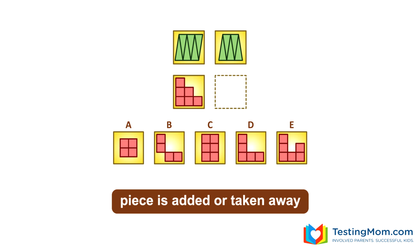Now let's look at an analogy puzzle. The rule in the top boxes is that one segment in the green figure is taken away. If we follow that rule on the bottom and take away one segment, D would be our answer.